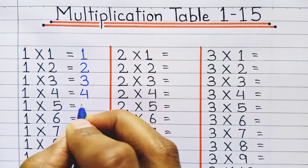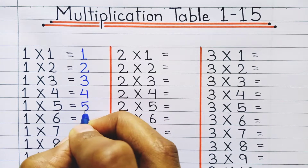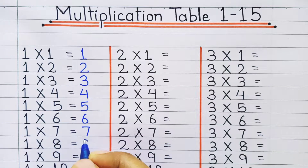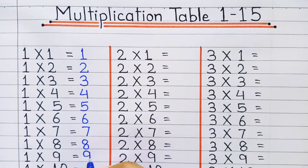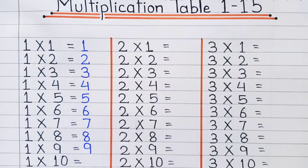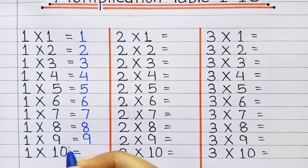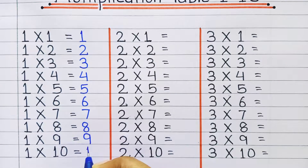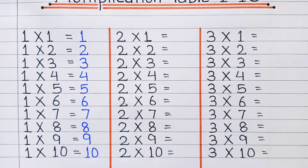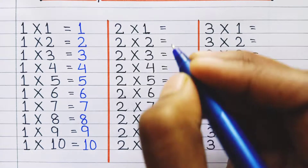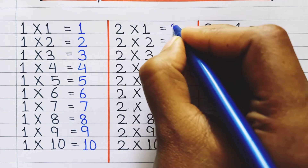1 three's a 3, 1 four's a 4, 1 five's a 5, 1 six's a 6, 1 seven's a 7, 1 eight's a 8, 1 nine's a 9, 1 ten's a 10. Table of 2: 2 one's a 2.